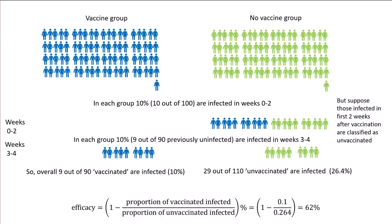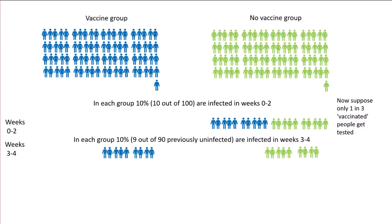But things can get even more ridiculous. It's quite common for those classified as vaccinated — in this case everyone who got the vaccine after two weeks — to be less likely to be tested for the disease than those who don't get the vaccine. For example, in the big observational trial of the Pfizer vaccine in Israel, each unvaccinated person was six times more likely to be tested in any given week than a vaccinated person.